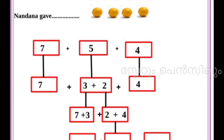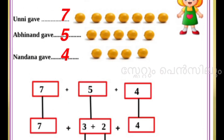1, 2, 3, 4, 5, 6, 7. Is it? Okay. 1, 2, 3, 4, 5, 6, 7 — Unni gave 7. Then Abhinand gave 1, 2, 3, 4, 5. Then Nandana gave 1, 2, 3, 4. Okay. In this picture you can see how many lemons Unni, Abhinand, and Nandana gave to Nusrat. Unni gave 7 lemons, Abhinand gave 5 lemons, and Nandana gave 4 lemons.